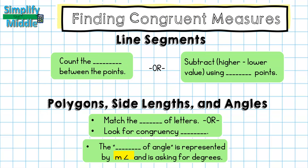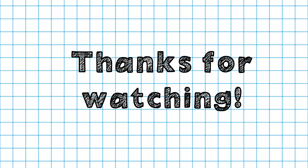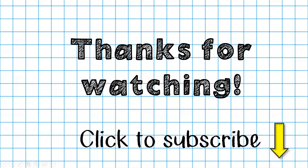Let's recap. For line segments on the coordinate plane, count the distance between the points or subtract higher and lower values using endpoints. If you have a congruency statement for polygon side lengths and angles, match the order of the letters in that congruency statement. Without a congruency statement, look for congruency symbols. The measure of angle is represented by this symbol and is asking for degrees. That wraps up our lesson — thanks for tuning in, and feel free to subscribe for this and other lessons!